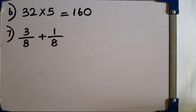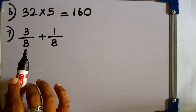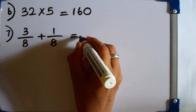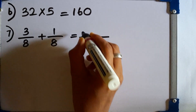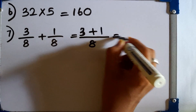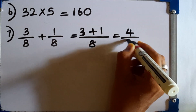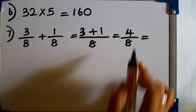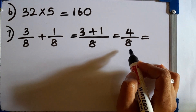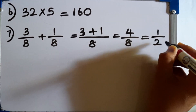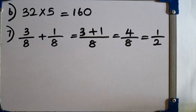Question number 7: we are given this to simplify — two fractions with equal denominators. The answer gets the same denominator. We add the two numerators: 3 plus 1 is 4. That gives 4 over 8. If you simplify this, divide both numerator and denominator by 4. The answer will be 1 over 4. That is the simplest answer.